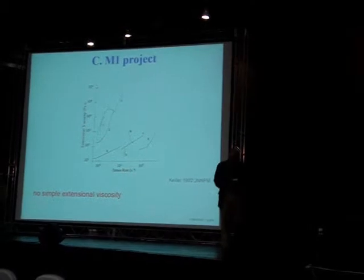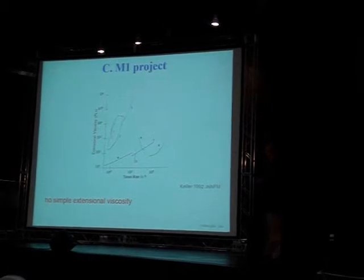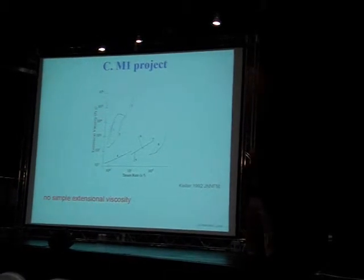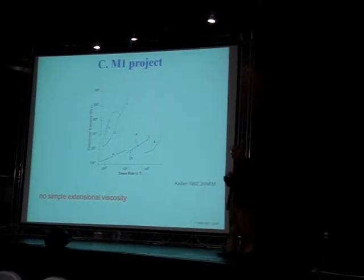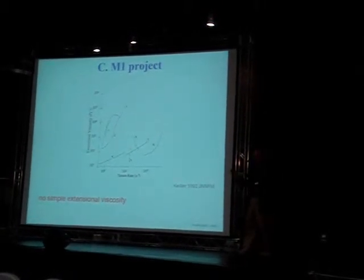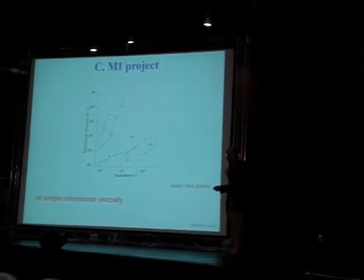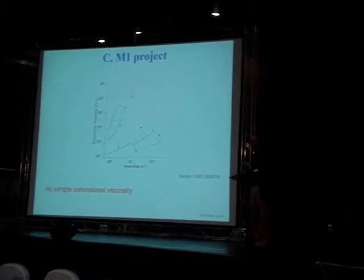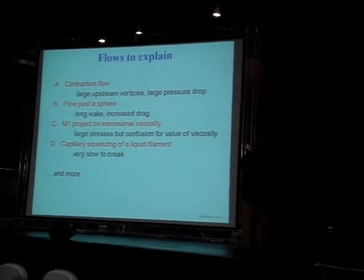The M1 project. People would say that the complex behaviour is all due to extensional viscosity. So 15 years ago we had an international project to try and measure the extensional viscosity. Magic between one, made at the University of Monash, that's why it's called M1, was sent round to a dozen laboratories in different countries with different apparatus. There are eight different apparatus here. They tried to measure the extensional viscosity and you see they found rubbish. There's no such thing.